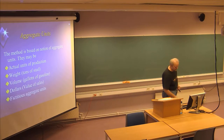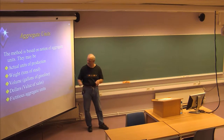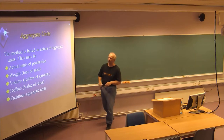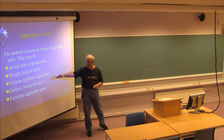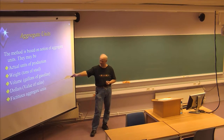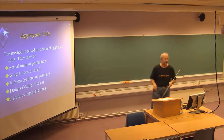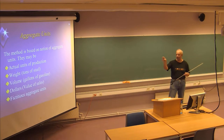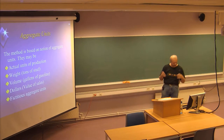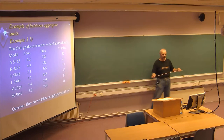These are examples of aggregate units as we have talked about. Actual units are used if you have a very simple product — you just count the number of units. Weight, volume, dollars or money could also be units, but also what we talked about: fictional aggregate units. These are not actually possible to point at one product and say 'this is one unit,' but are put together with several similar types of products.